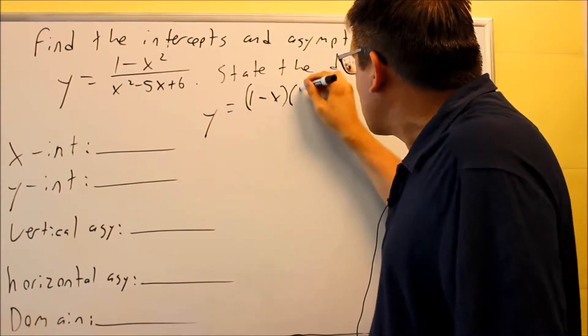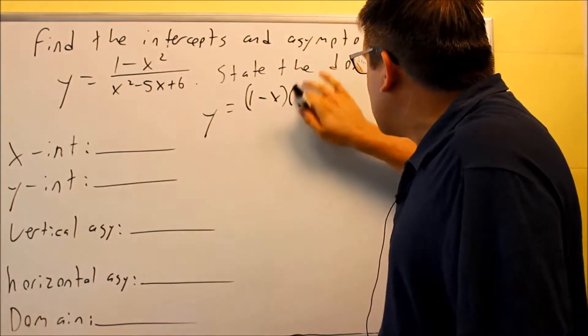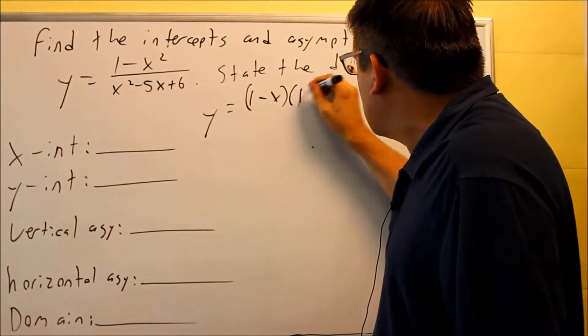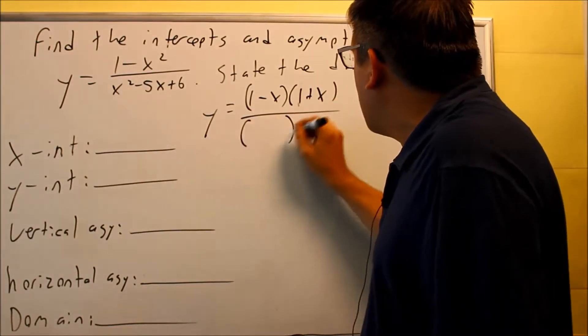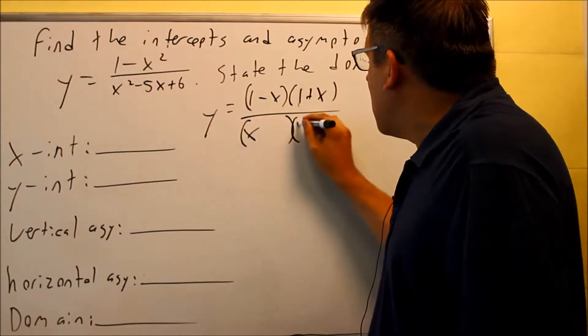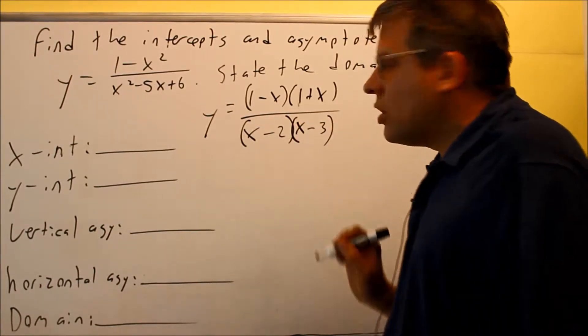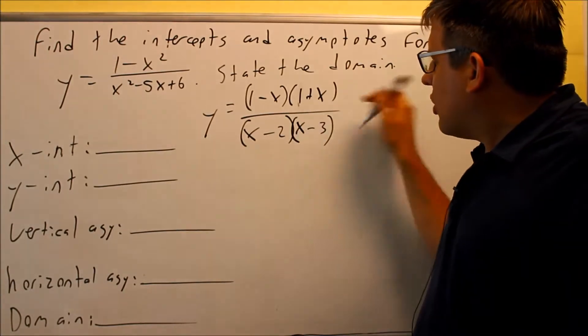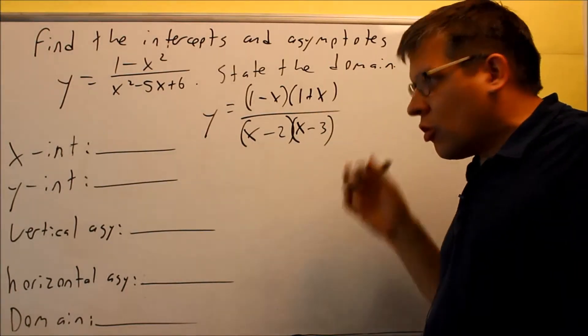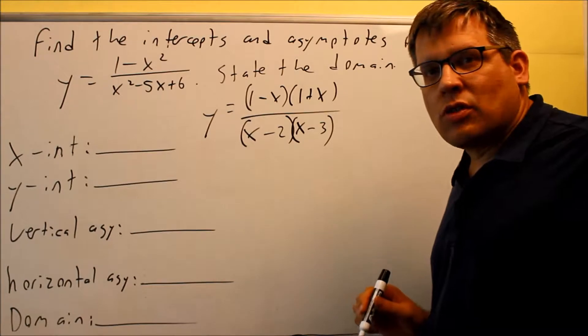we do difference of squares in the top, 1 minus x, 1 plus x, and then on the bottom here, we can factor that one as well, and we get x and x here, and then we're going to do 2 and 3. Both of them are going to be negative, and we notice here that nothing is going to cancel out, so we're okay. We can continue on with the rest of this.